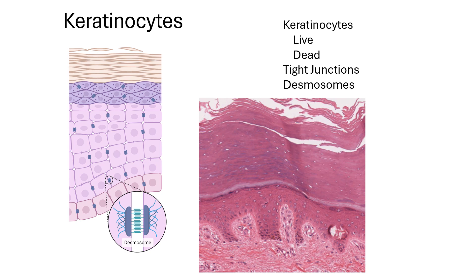We learned from another mini lecture that the skin participates in providing an outer covering, preventing dehydration. When you damage or burn your skin, it basically creates the inability to keep liquids inside your body. Burns of second and third degree are essentially just weeping your fluids out, leading to low blood volume and dehydration.